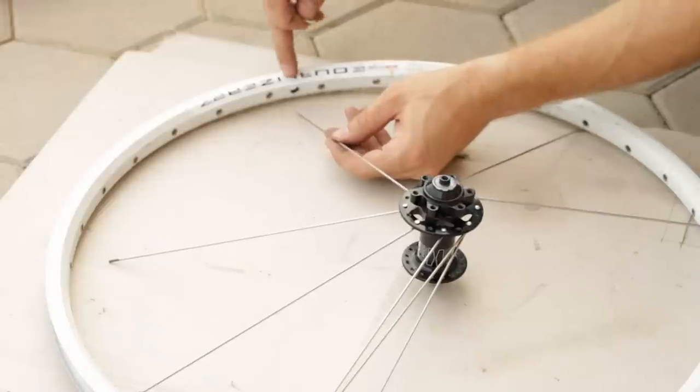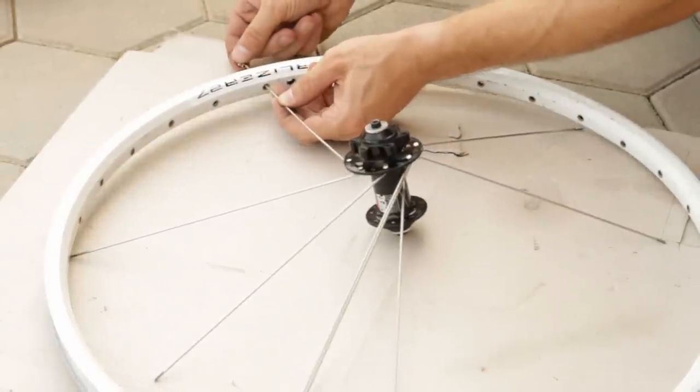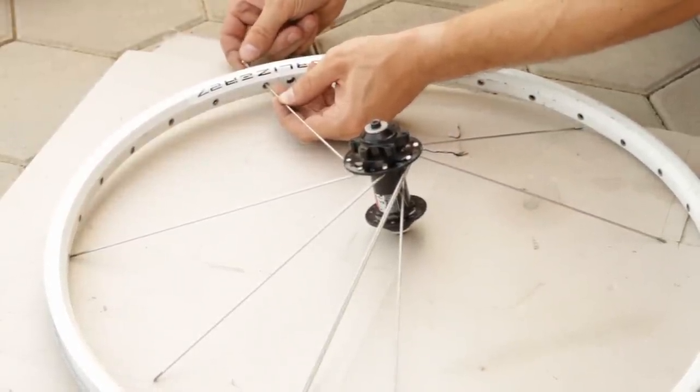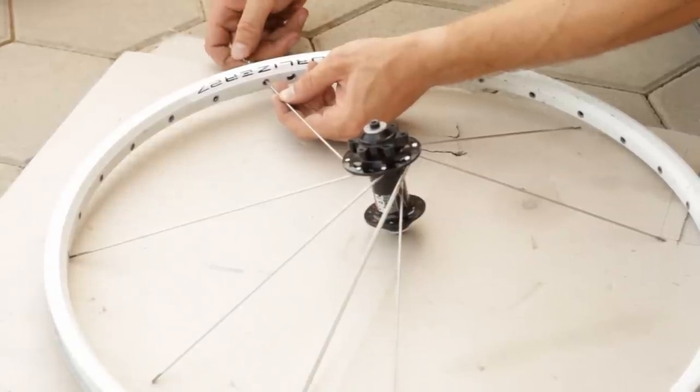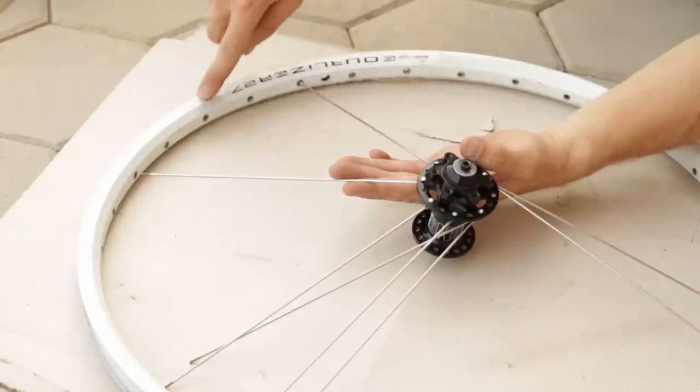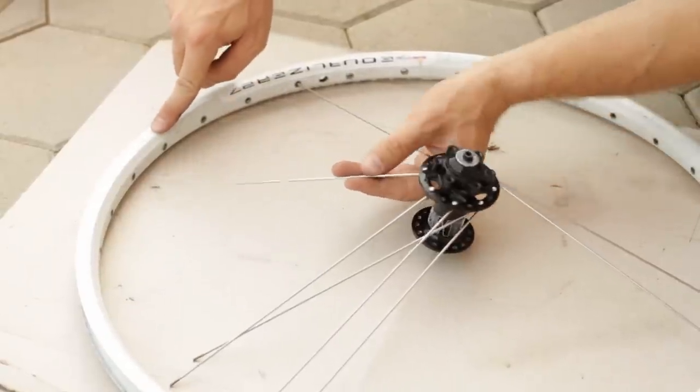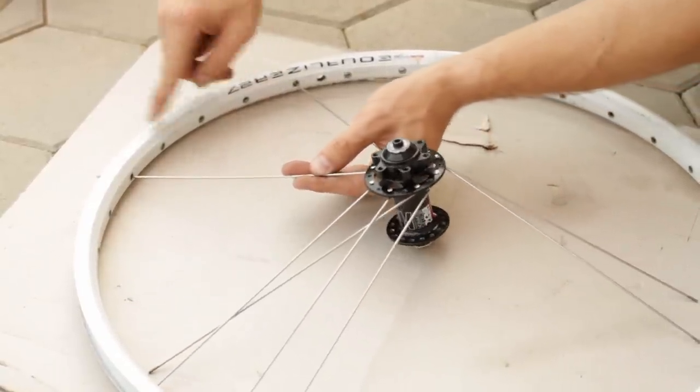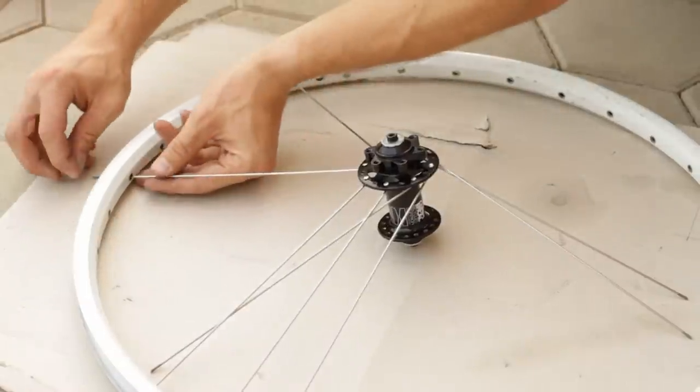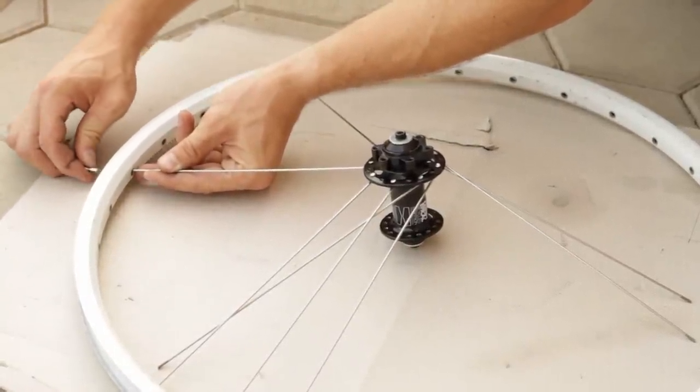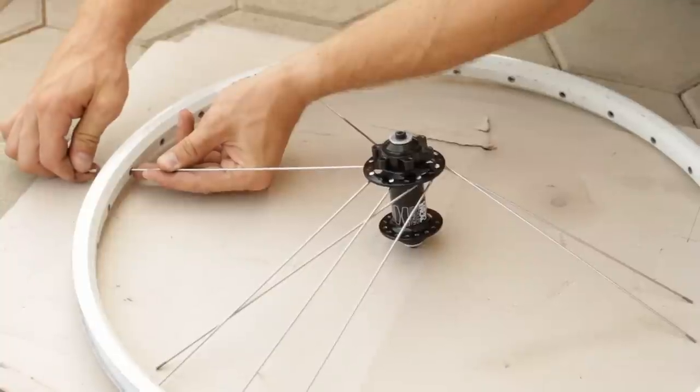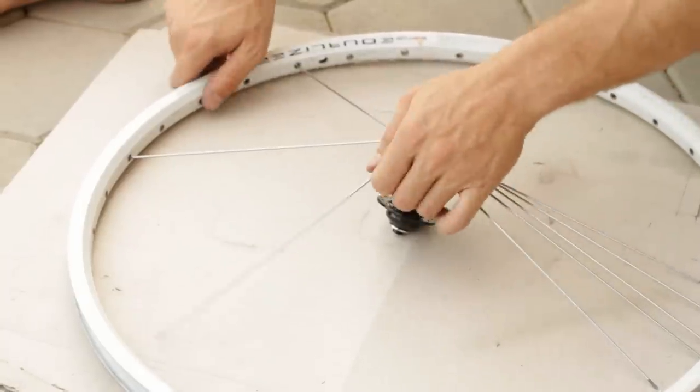Bring a spoke from the hub into the first rim hole counter-clockwise from the valve hole. Thread the nipple onto the spoke clockwise three turns to secure it, yet not tighten the spoke. Put the next spoke on the hub into the hole in the rim four holes away from the first spoke and thread the nipple onto the spoke three turns. Continue around the wheel in the same manner.